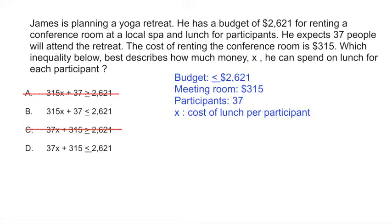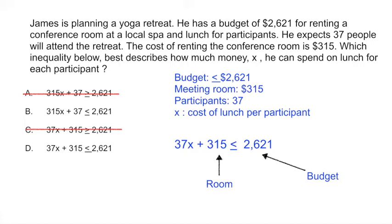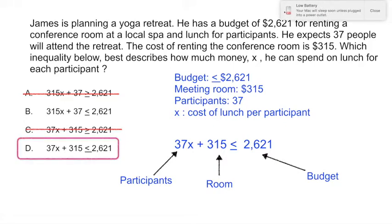Collecting the data: the budget is less than or equal to $2,621; the meeting room is a fixed cost of $315; we have 37 participants; and X is the cost of lunch per participant. The inequality you set up is: 37X plus 315 less than or equal to $2,621 — where $2,621 is the budget, $315 is the room cost, 37 is the number of participants, and X is the cost of lunch per person. The correct answer is D.